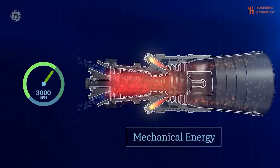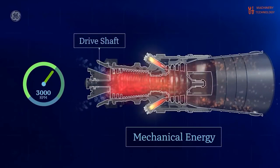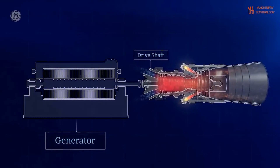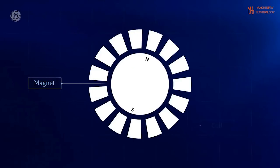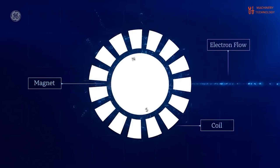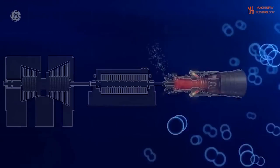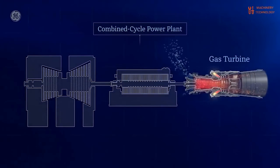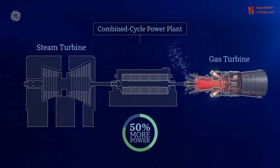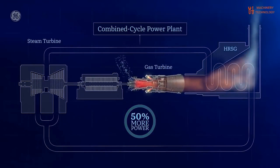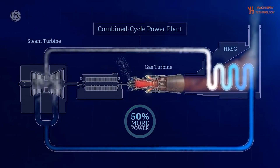Large planes use what are known as turbofan engines, which are nothing more than a gas turbine combined with a large fan at the front of the engine. The core of the turbofan is a normal gas turbine engine. The difference is that the final turbine stage drives a shaft that makes its way to the front of the engine to power the fan. This multiple concentric shaft approach is extremely common in gas turbines.